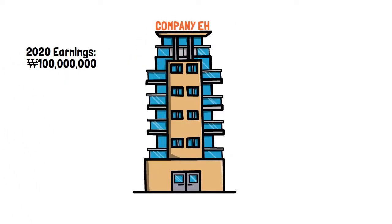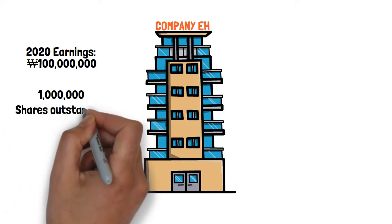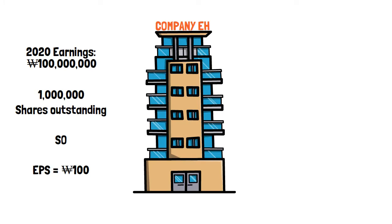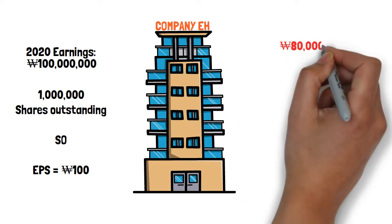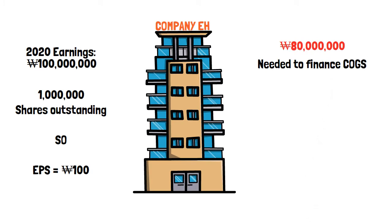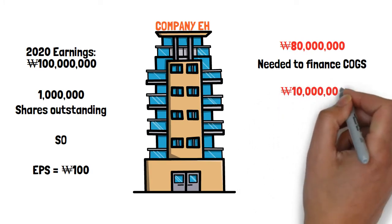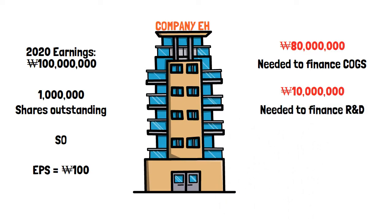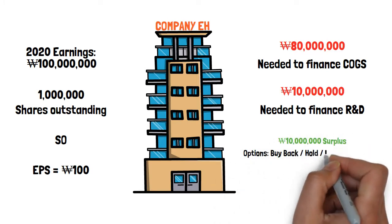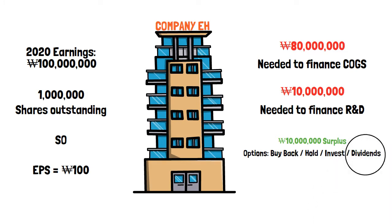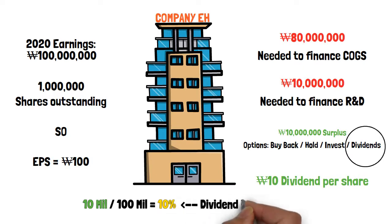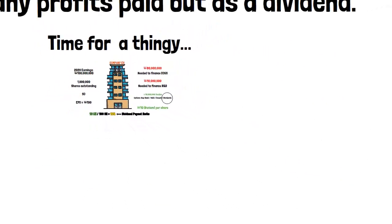Over the course of 2020, Company A earned 100 million won. To make it easy, let's say they have 1 million shares for a total earnings per share of 100 won. Company A estimates that 80% of that will be used for their COGS, or cost of goods and services, leaving around 20 million won to play with. They also estimate they'll need 10 million won to invest in new research, innovation, and expansion. So at the end, you have 10 million won left over as unused capital, which they decide to pay out to shareholders — a dividend of 10 won per share. In this example, Company A's baedang seonghyang would be 10%, because 10 million won out of 100 million won is 10%. DPR is the percentage of a company's earnings that will be paid out to investors.